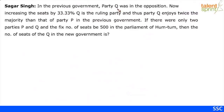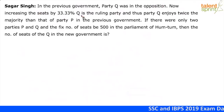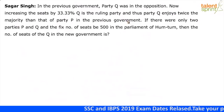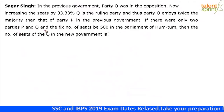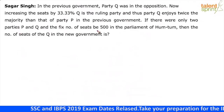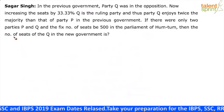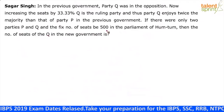In the previous government, party Q was in the opposition. Now increasing the seats by 33.33%, Q is the ruling party and thus party Q enjoys twice the majority than that of party P in the previous government. If there were only two parties P and Q and the fixed number of seats be 51 in the parliament of Hamtum, then the number of seats of Q in the new government is?